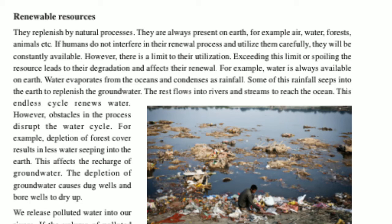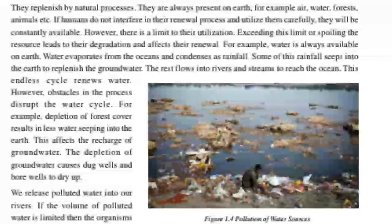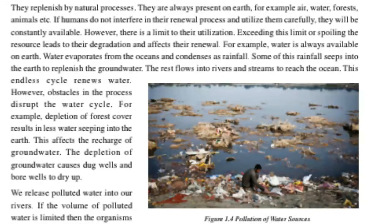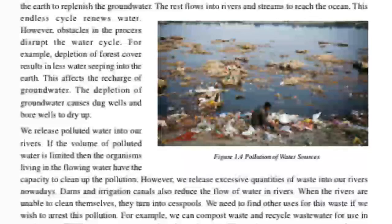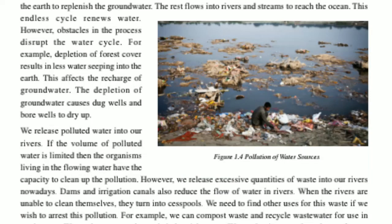For example, water is always available on Earth. Water evaporates from the ocean and condenses as rainfall. Some of this rainfall seeps into the earth to replenish groundwater; the rest flows into rivers and streams to reach the ocean. This endless cycle renews water. However, obstacles in the process disrupt the water cycle — for example, depletion of forest cover results in less water seeping into the earth, affecting the recharge of groundwater.